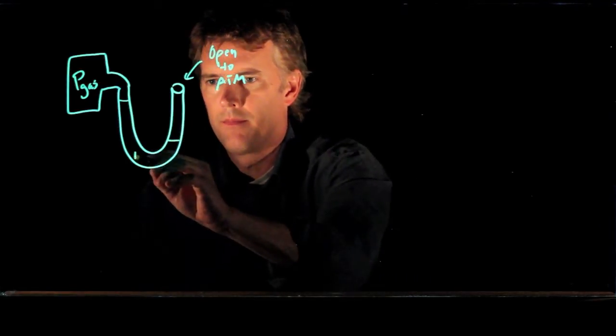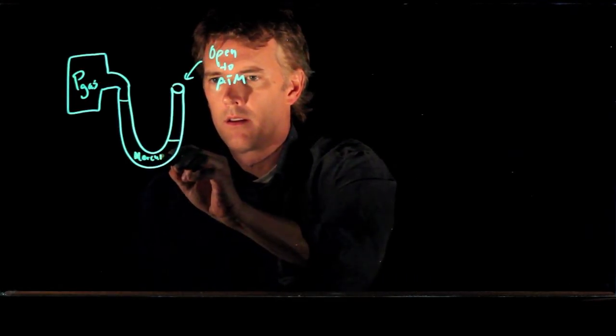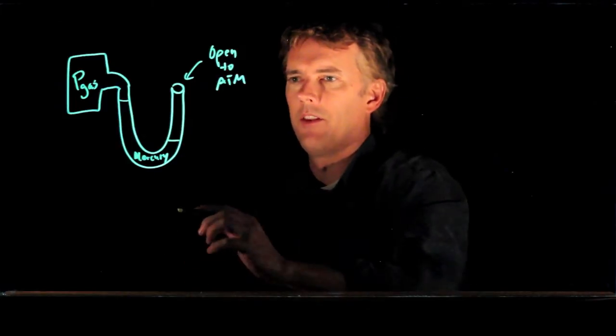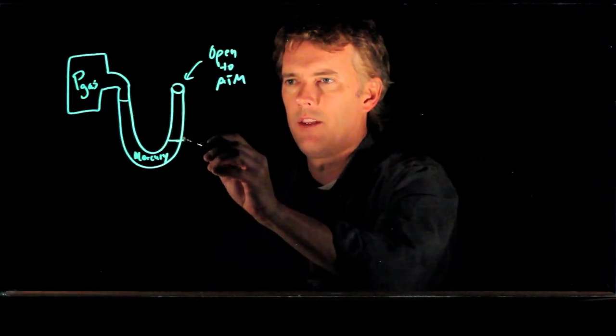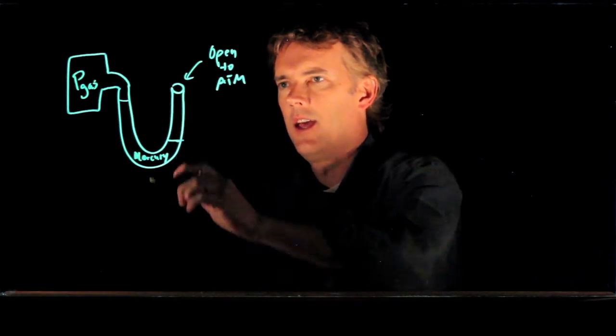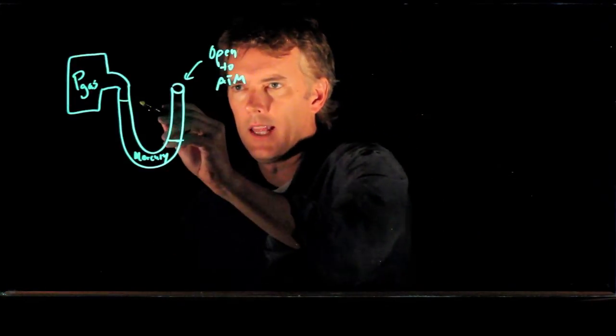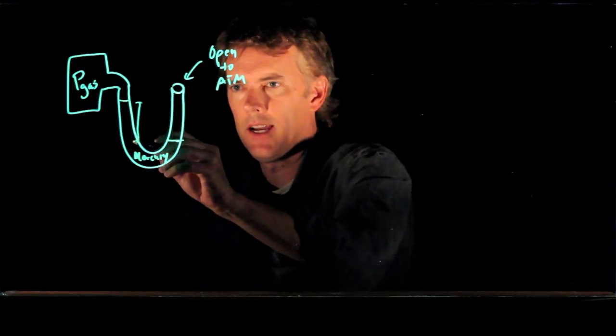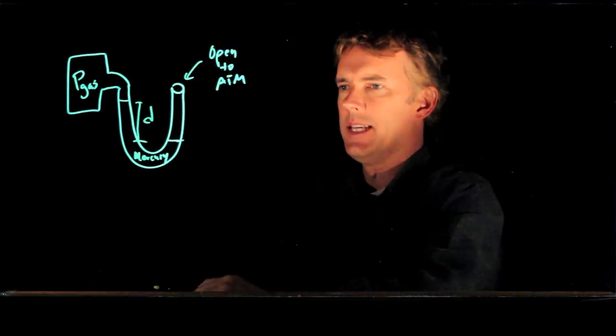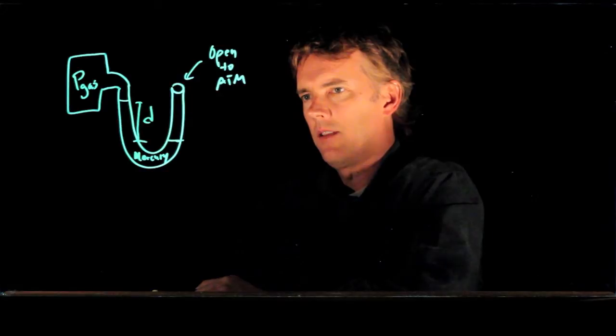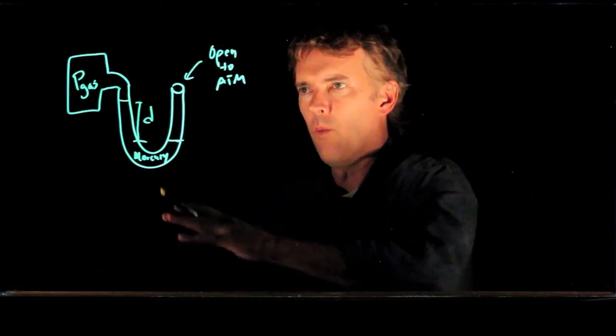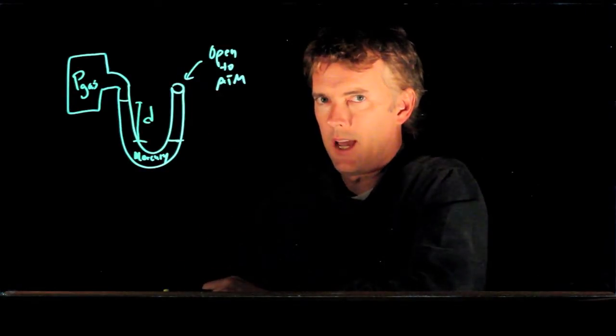And the mercury comes to equilibrium when it's in this position. It's lower level on this side than it is on that side. Everything above the mercury over there is gas. And let's say that that difference in height is given by D. And now we want to calculate, based on this information, what is the pressure in the gas.